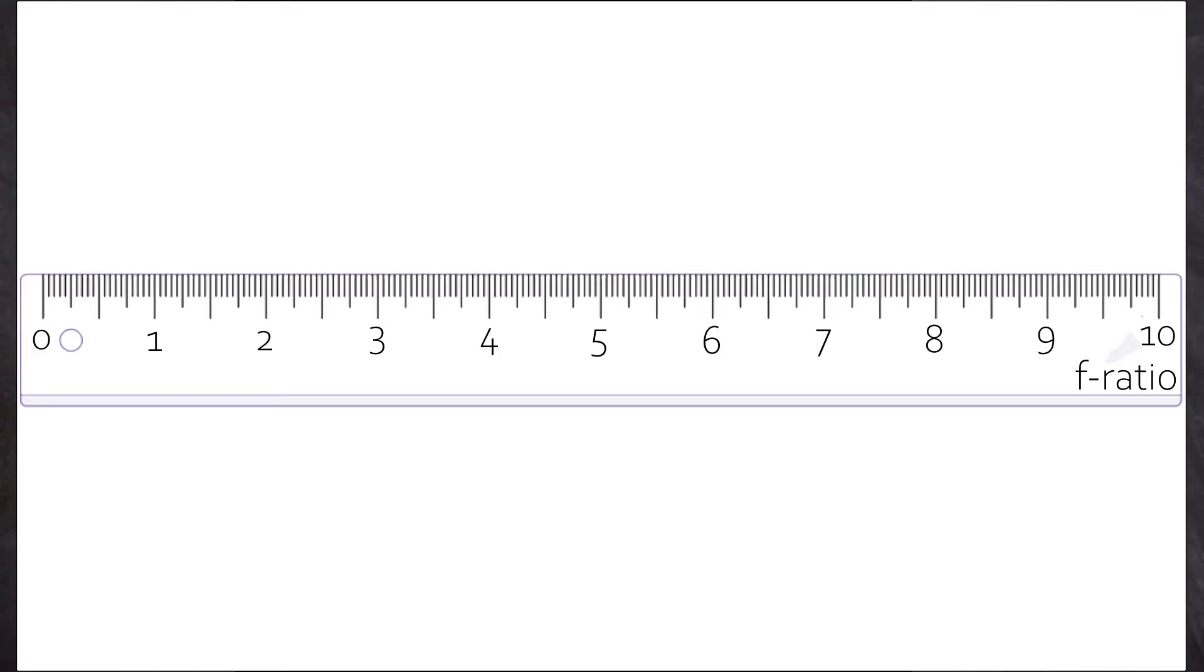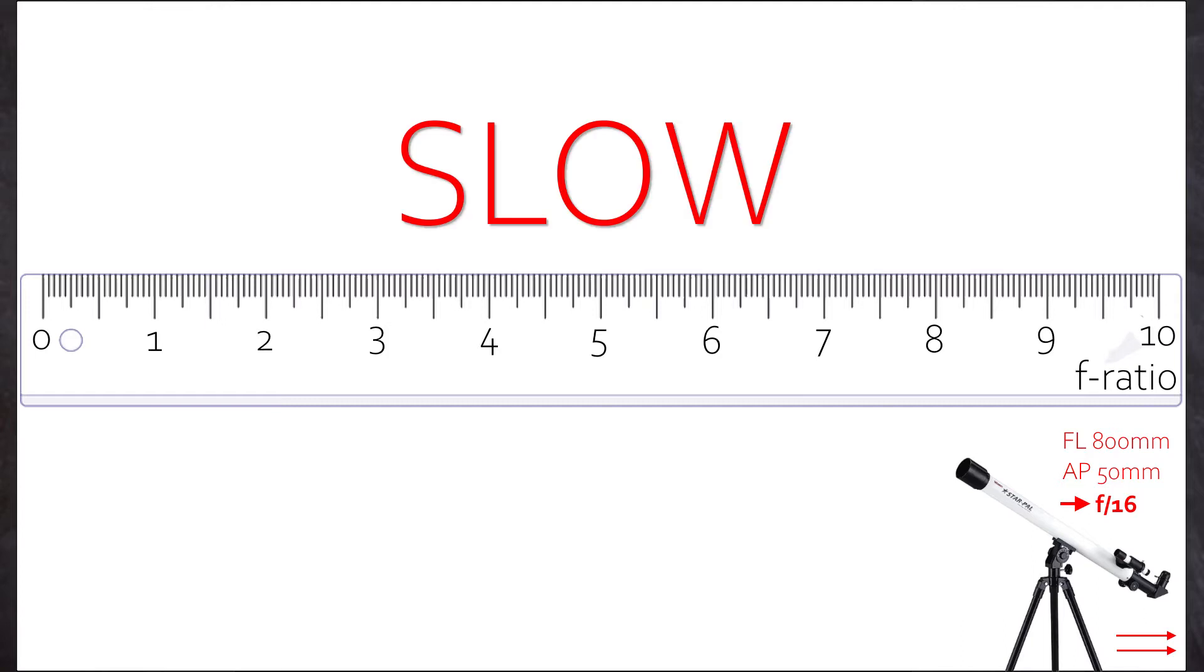Here are examples of reasonable f-ratios on the market. We start with a rather cheap scope. It's quite long, focal length 800mm, and rather narrow with 50mm aperture. So the f-ratio is f16 and therefore we call this scope slow.